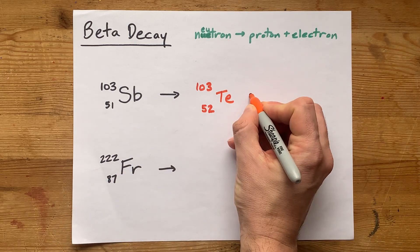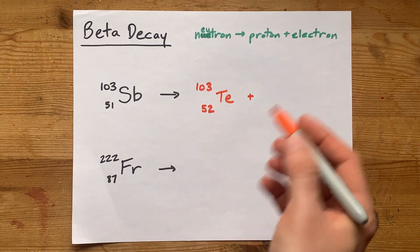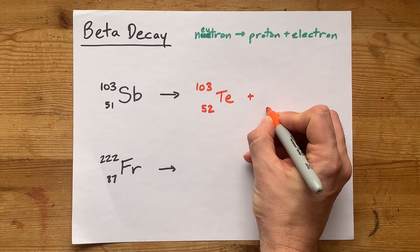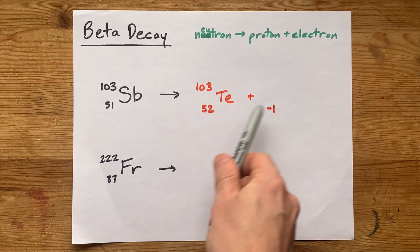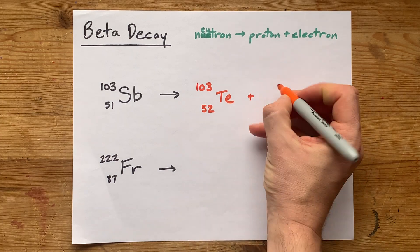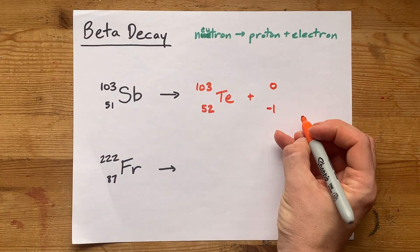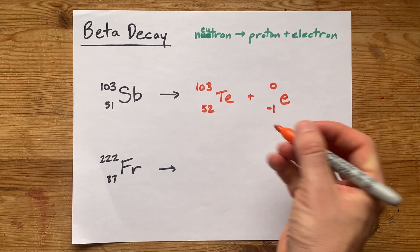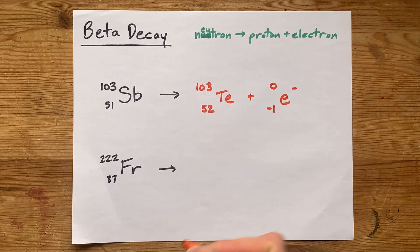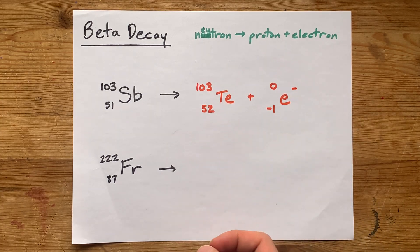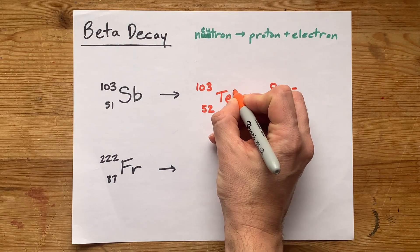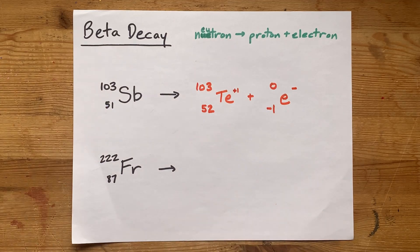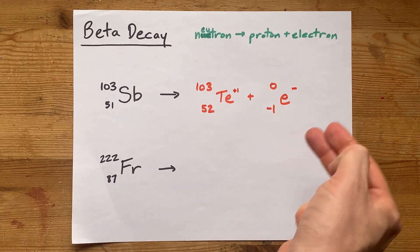Now, what's the symbol for a beta particle? Well, some teachers write beta itself, but others will write a minus one atomic number and a zero atomic mass, along with a lowercase e to show that it's an electron. And some of them will also write a minus sign there, because electrons are negatively charged. That would mean that this is positive one charge, because there was no charge there. But that's not the point. The point is that this is the symbol for a beta particle.